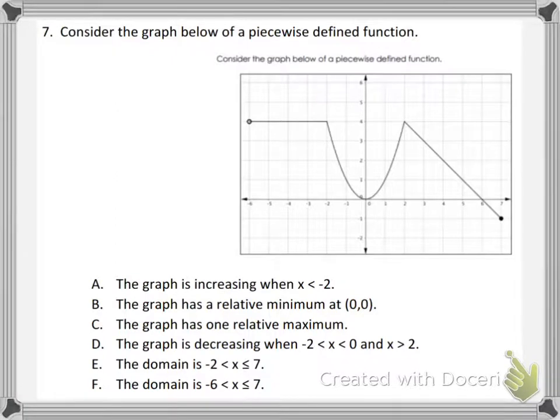Number 7: Consider the graph of the piecewise function defined below and just select all that apply. So we're basically just going to go through each one of these answer choices and understand why it is or is not part of the answer. Number 1: The graph is increasing when x is less than negative 2.